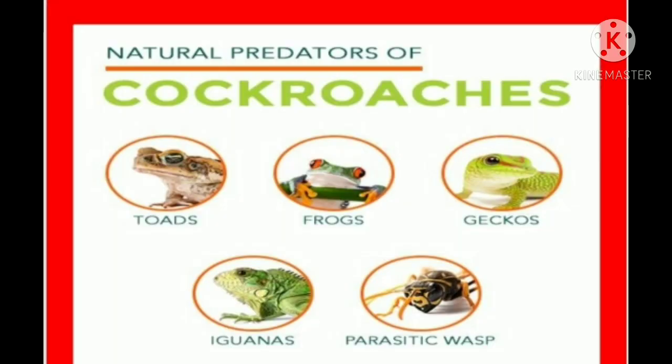Some natural predators of cockroaches include toads, frogs, geckos — which are vocal lizards with a flat backside — iguanas, and parasitic wasps. These are the predators that eat cockroaches.